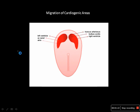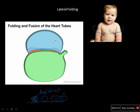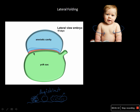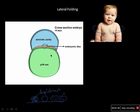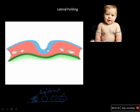Next we are going to see how the heart assumes its proper anatomical position. This is the trilaminar disc with ectoderm, mesoderm, and endoderm, amniotic cavity, and yolk sac. If we have a section like this, you can see the mesoderm — the lateral plate mesoderm — developing the intra-embryonic coelom, which is the future pericardial cavity.